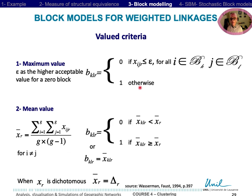Another criteria is the mean value. If the mean value of the links between blocks K and L is greater or equal to general means, then the block is defined as 1 block.